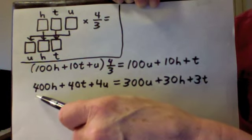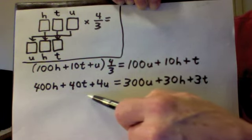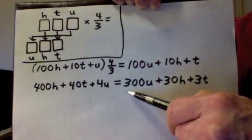I have 400h plus 40t plus 4u equals, and I'm multiplying by three, so I have 300u plus 30h plus 3t.